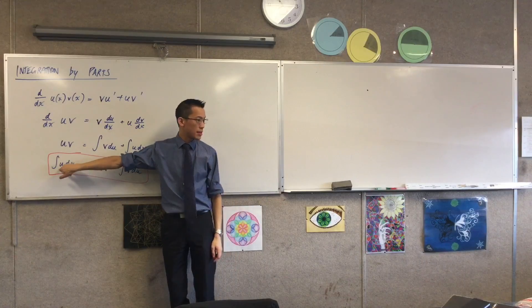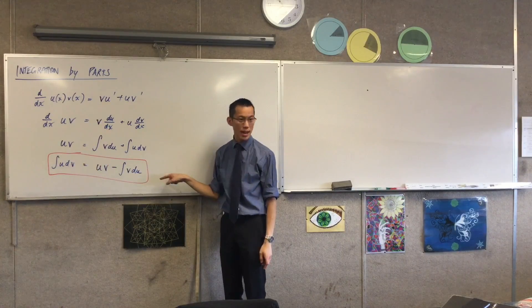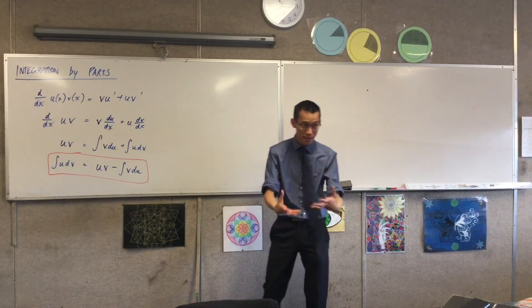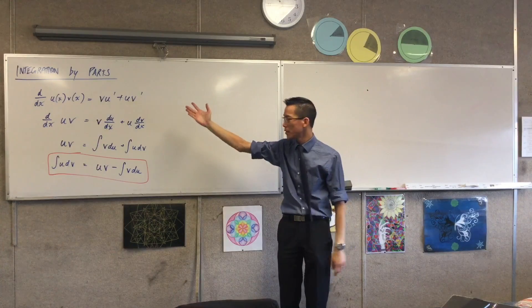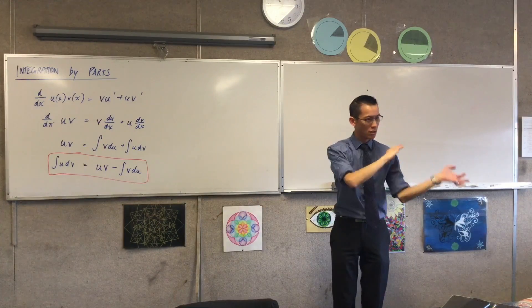If you can define them as such and work out what all the pieces are over on the right-hand side, these are the parts where integration by parts gets its name, then you can take that integral and you can evaluate it.